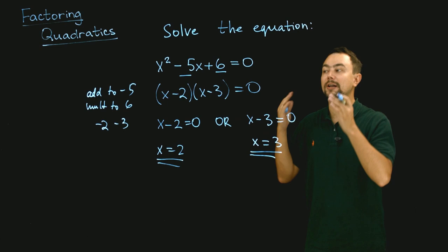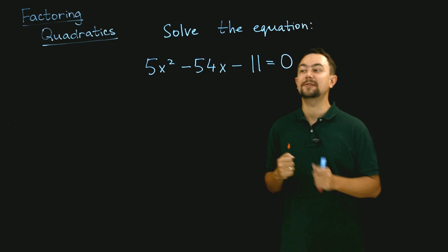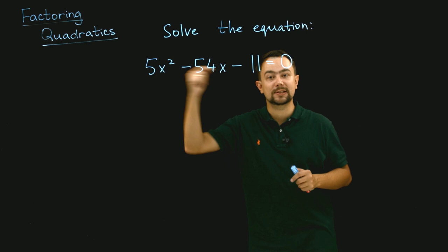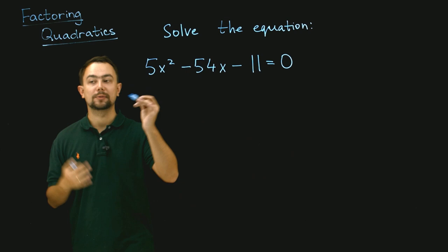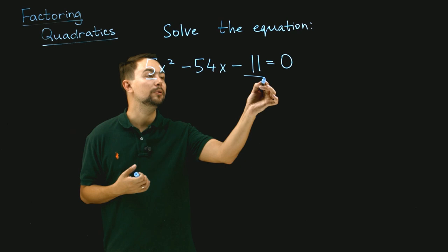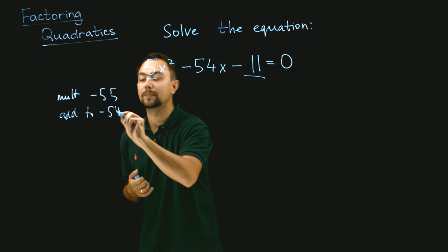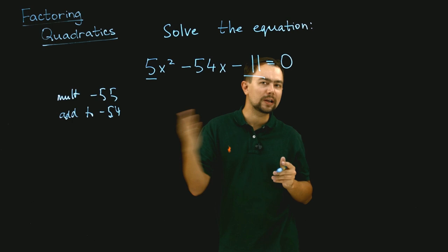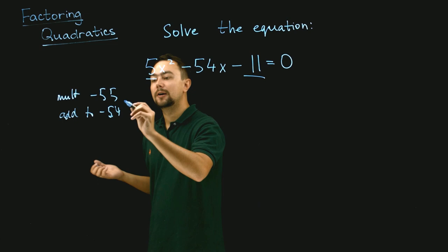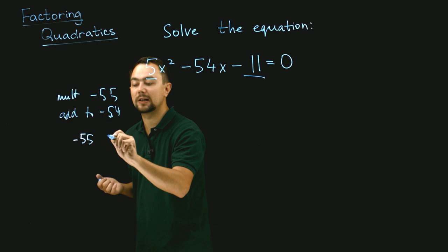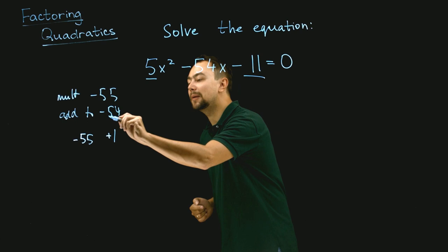Let's solve another equation: 5x squared minus 54x minus 11 equals 0. It has 5 in front of x squared, so we use the same method. We find two numbers that multiply to negative 55 and add to negative 54. What multiplies to 55? It's 1 and 55, or 5 and 11. So it's going to be minus 55 and plus 1, because minus 55 plus 1 is minus 54, and minus 55 times 1 is negative 55.